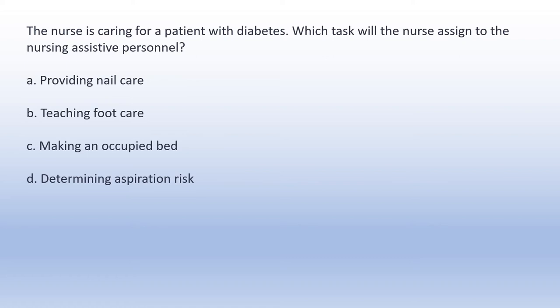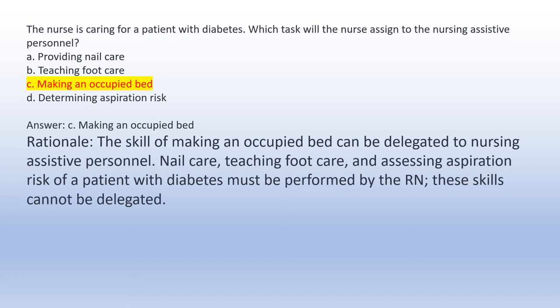The nurse is caring for a patient with diabetes. Which task will the nurse assign to the nursing assistive personnel? A. Providing nail care. B. Teaching foot care. C. Making an occupied bed. D. Assessing aspiration risk. Answer C: Making an occupied bed. Rationale: The skill of making an occupied bed can be delegated to nursing assistive personnel. Nail care, teaching foot care, and assessing aspiration risk of a patient with diabetes must be performed by the RN and cannot be delegated.